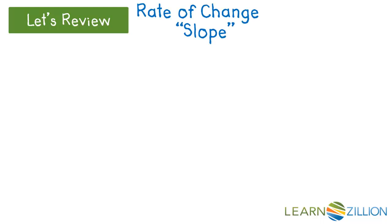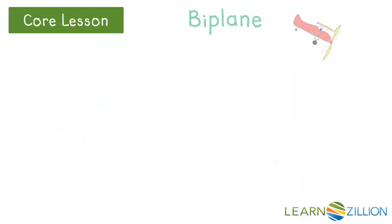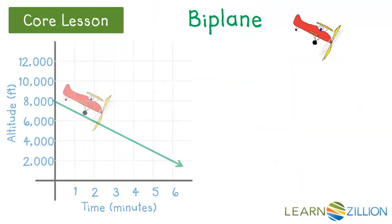So far, we've looked at determining rate of change of positive slopes by comparing driving and flying. Calculating negative slopes is done in the same way. This graph shows a biplane losing altitude. If the line is decreasing or negative, the rate of change is negative. So let's draw a slope triangle to determine the rate of change.